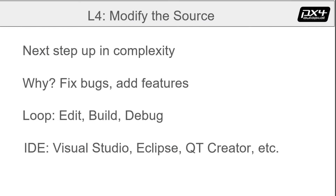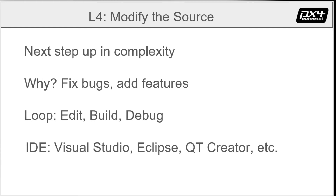Now we've got level four: modify the source. This is a step up in complexity from level three. Dev skills are pretty much required, and in many cases you will need to understand the architecture of PX4. Why would you do this? The most common scenarios are to add features and to fix bugs. The standard dev loop applies: edit, build, debug — repeat. At this level, many devs find an IDE to be very helpful. Religions are founded on this and wars are fought over it. I prefer to use an IDE, so we will demo with an IDE.